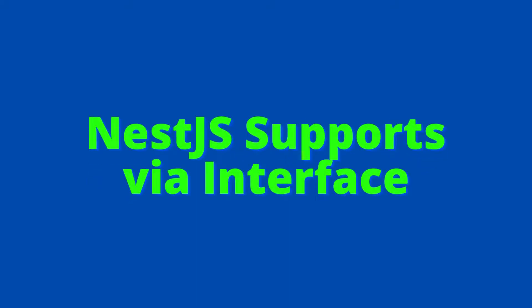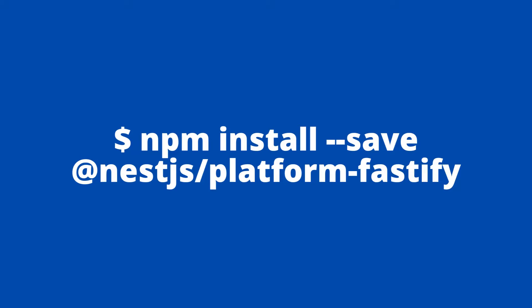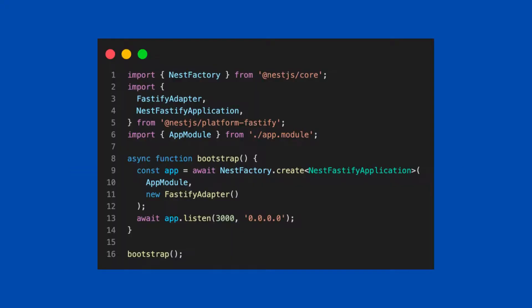NestJS supports these platforms by exposing their own interfaces. Platform Express exposes the NestExpressApplication type. We can instruct the NestFactory.create method to return the app object of a specific platform type. To specify Express, we tweak the main.ts file and import NestExpressApplication from the @nestjs/platform-express package. In the case of Express, we don't need to do this explicitly — if nothing is specified in the create method, the application will automatically use Express. However, to work with Fastify, we need to install the platform-fastify package, and then enable the Fastify adapter within the main.ts file at the time of bootstrapping.